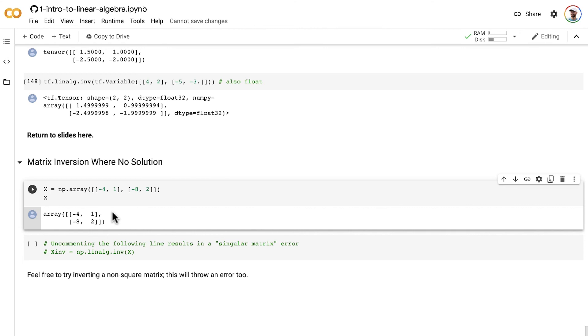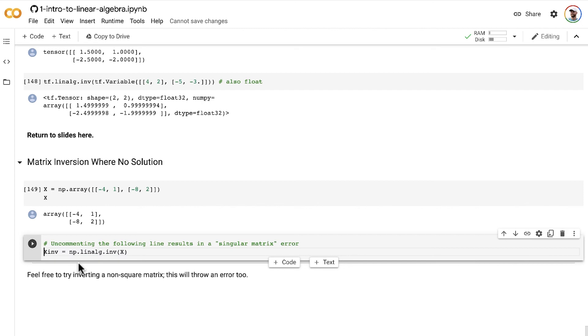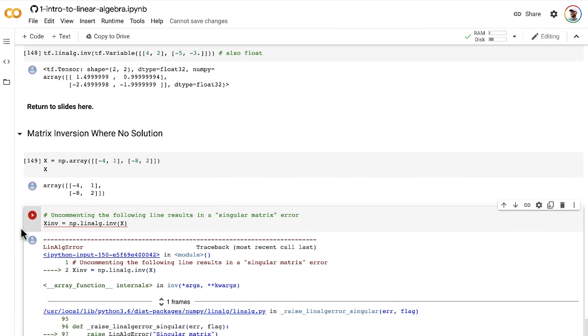Now, we have a problem here, because this is a singular matrix. This second line is parallel to the first line, and we can tell that because it's a multiple of the first line. So what this means is that we're not going to be able to invert this matrix, and you can prove that to yourself by uncommenting this line of code here and trying to invert it. Nope, it does not work. In fact, the error even comes out and tells you that this results in a singular matrix error.